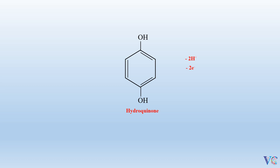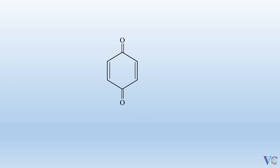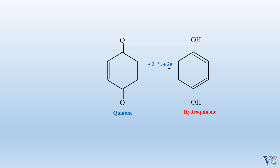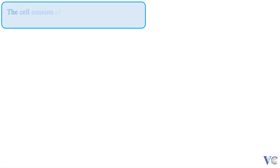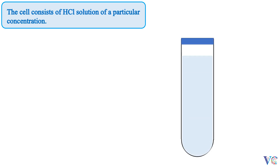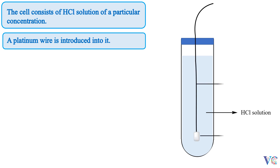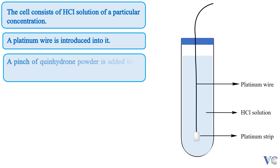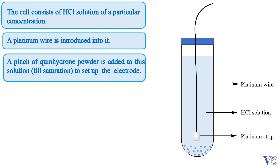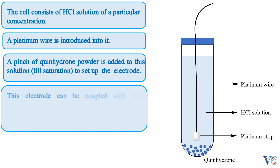Hydroquinone undergoes oxidation to give quinone. This reaction can be viewed as a reversible redox process. The cell consists of HCl solution of a particular concentration. A platinum wire is introduced into it, and a pinch of quinhydrone powder is added to this solution till saturation to set up the electrode. This electrode can be coupled with other reference electrodes, like the calomel electrode, for the determination of pH of the unknown solution.